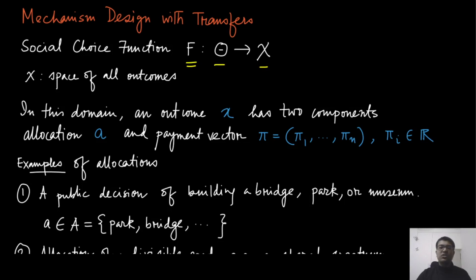In this context of mechanism design with transfers, the outcome, let's say x which lives in this set script of X, has two components. The first component is an allocation and the second component is a payment vector, which gives each of these individuals some amount of payments or transfer. We will see how these two things are related, the transfers and the allocations.